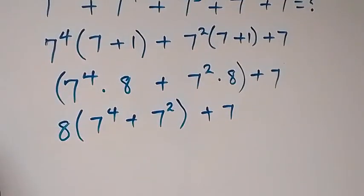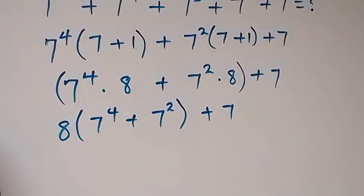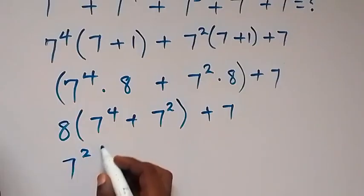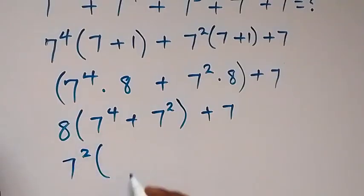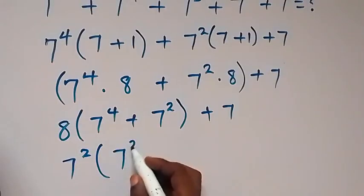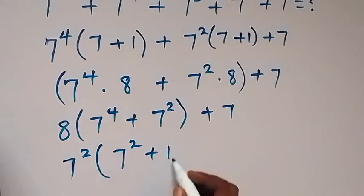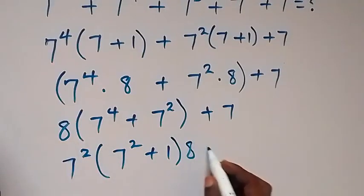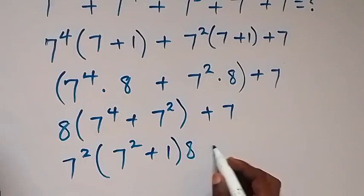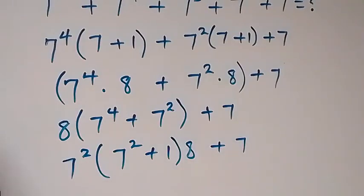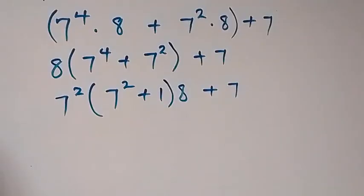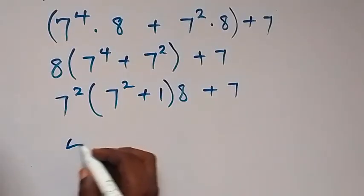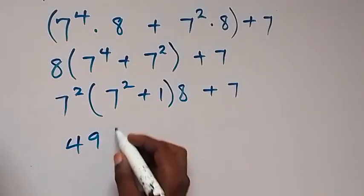In the next step, we can still factor 7 squared out. Then we have 7 squared into bracket: what is left here will be 7 squared, then plus 1 left here. We already have 8 outside, so times 8, then plus 7.